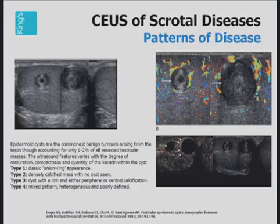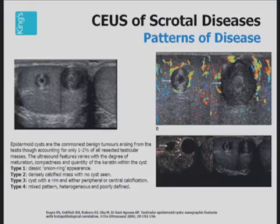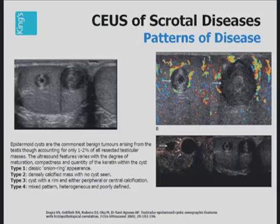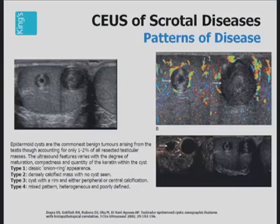Here is another not very common intratesticular lesion, but importantly, benign — this is an epidermoid cyst. Only one to two percent of testicular tumors are epidermoid cysts. There are characteristic features on B-mode ultrasound: the classical onion ring appearance allows the confident diagnosis of a benign epidermoid cyst. However, there are other types: densely calcified cysts, or a mixed heterogeneous poorly defined abnormality. The key to the diagnosis is the complete absence of vascularity. Color Doppler ultrasound is usually very good at showing no vascularity, but the addition of contrast allows greater confidence in interpretation.